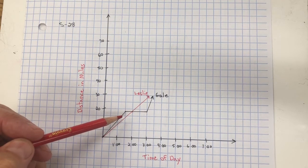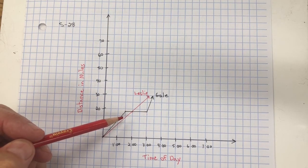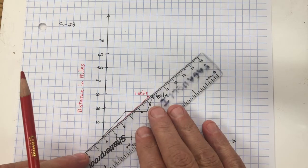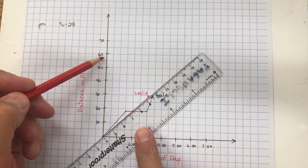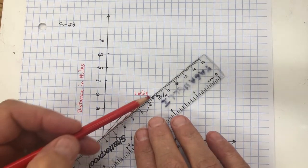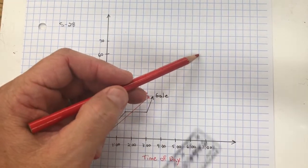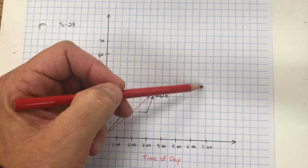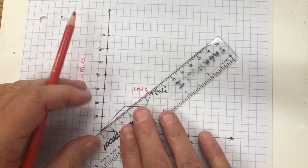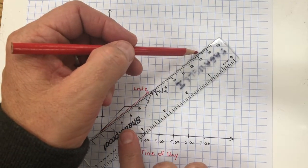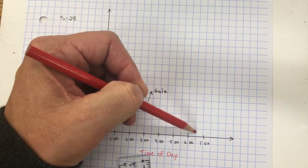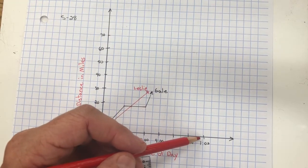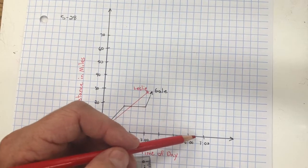If Leslie continues at a steady pace, when will she complete the race? If I take a straight edge, and remember, it's a 60-mile race, so if I go to 60 miles and I take my straight edge and I continue it up to 60 miles, where they intersect, if I come down here, 60 miles is going to be about right here. And I come down, and it's somewhere maybe around 6:20, 6:30, maybe even 6:40 or 6:50, but anywhere around there because it's just an approximate.